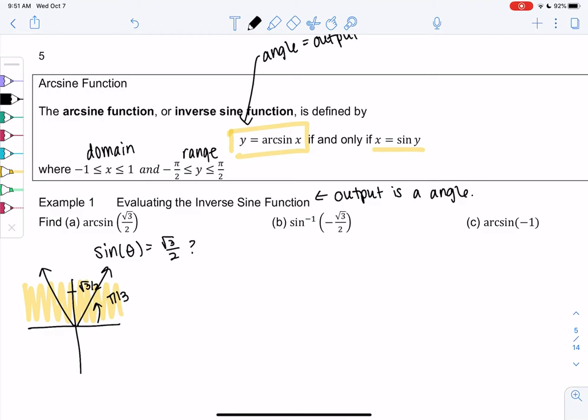It would also be 2 pi over 3, but we just learned the domain was negative pi over 2 to pi over 2 for arcsine. So we have to restrict the domain so that there's only one output, otherwise there's lots of outputs. So the solution would be pi over 3, because that's the angle that makes root 3 over 2 but is also in the domain.